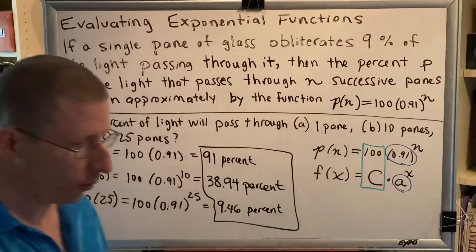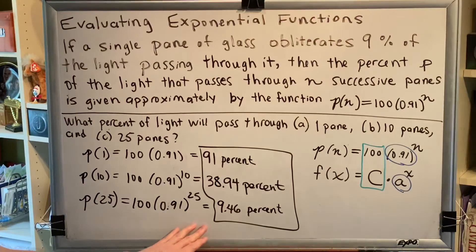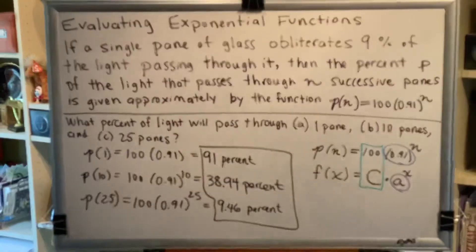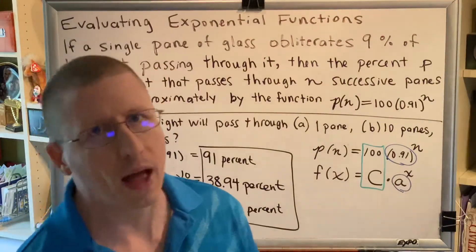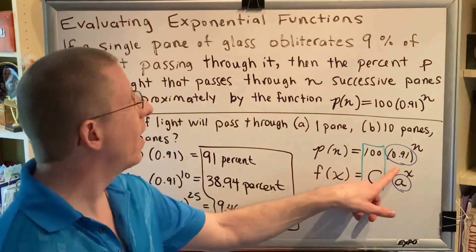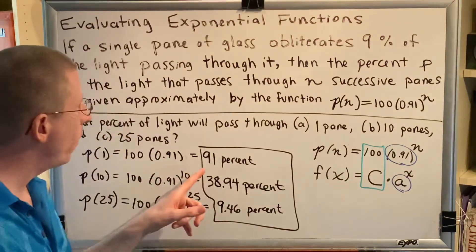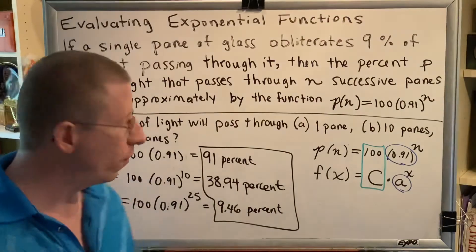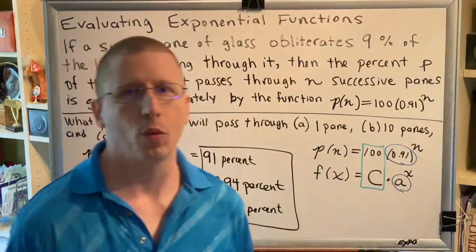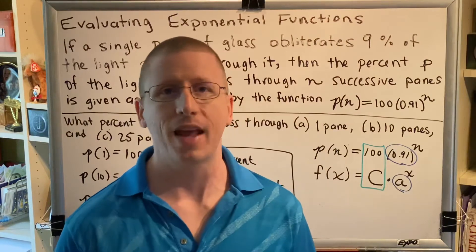So the last thing I'd like to share with you before I call this video done is let's take a look at what's going on with this number. The first thing I want you to understand is that we are not subtracting 9% for each new pane of glass. We're multiplying by 91%. And there's a big difference between those two things. And for that reason, what that means is no matter how many panes of glass you have, the amount of light that gets through will always be some positive value. You can't have zero light and you can't have negative light.